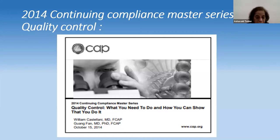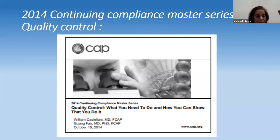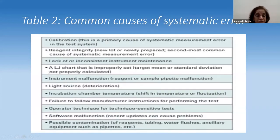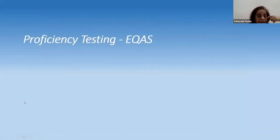There is a CAP document that covers quality control and how to demonstrate compliance. Common random errors and common causes of systematic errors are listed — you would go through each one to check if an error has occurred.